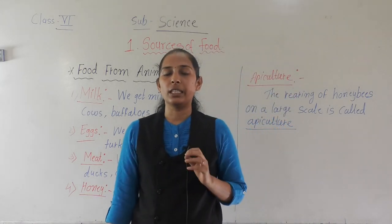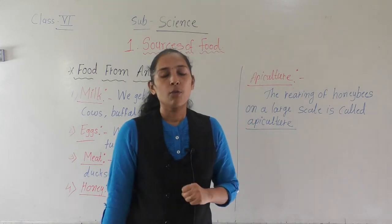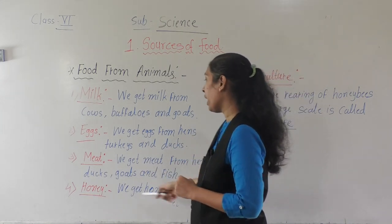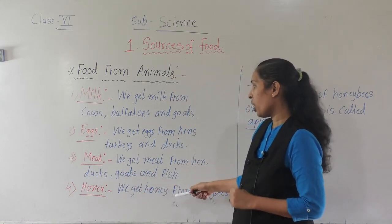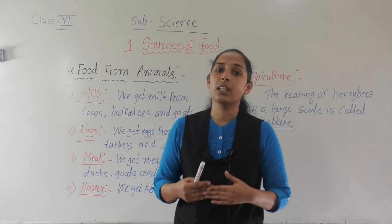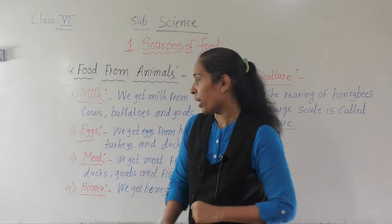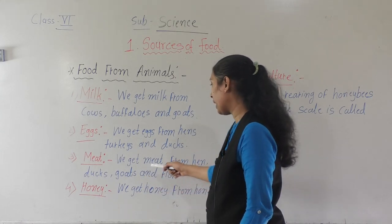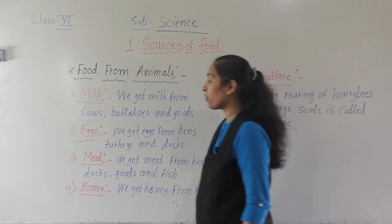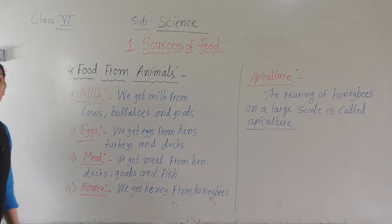Next, we will discuss meat. Meat is also a rich source of protein, and protein helps us to build our body. We get meat from hens, ducks, goats, and fish. By eating meat we get a good amount of protein which helps to build our body.